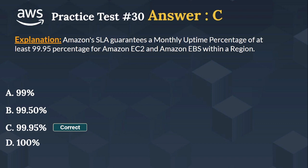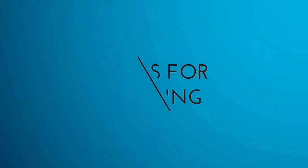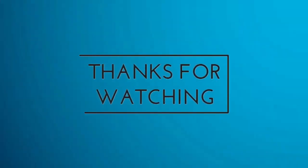The right answer is Option C, 99.95%. Amazon's SLA guarantees a monthly uptime percentage of at least 99.95% for Amazon EC2 and Amazon EBS within a region. If you have any questions or doubts, feel free to ask in the comment section below. Thank you for watching. Bye and have a nice day.